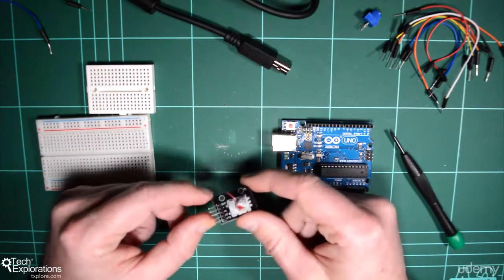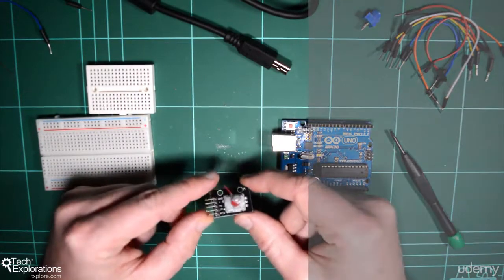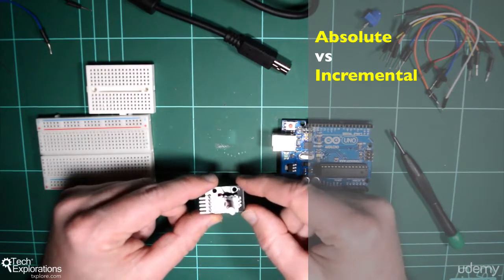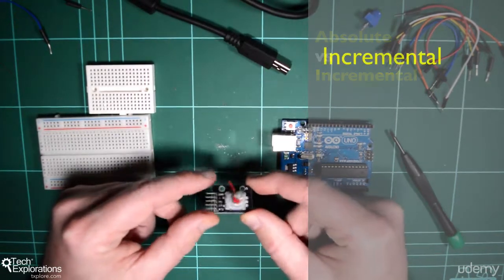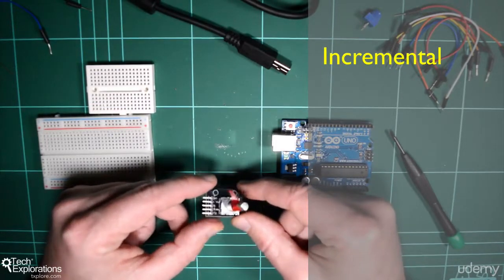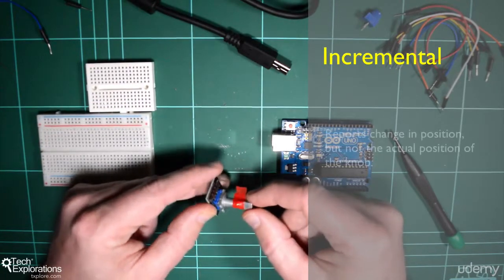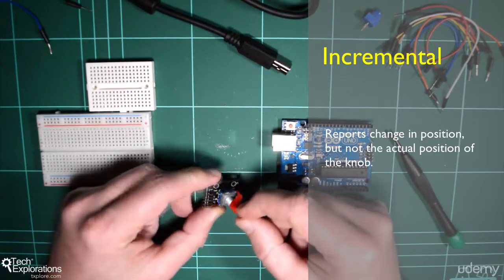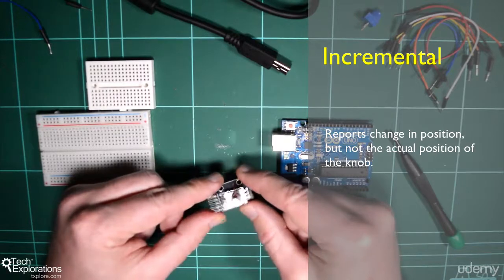We can also divide rotary encoders into two general types. There's the absolute and incremental types. Now, the one that I'm holding here is an incremental type. So the encoder will report change only, but not the actual position of the knob.